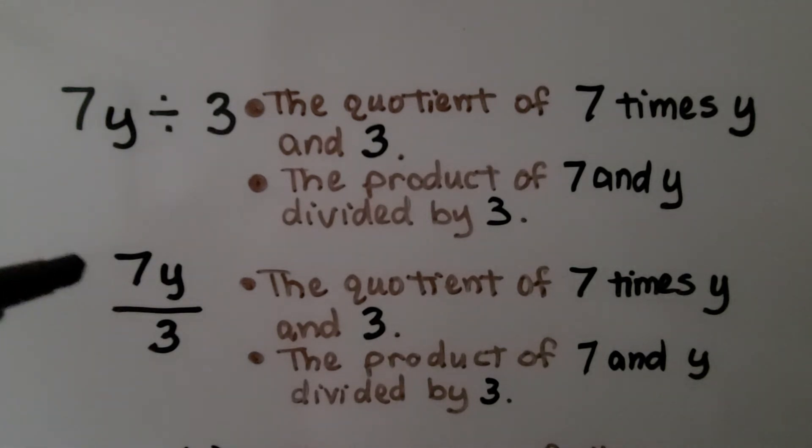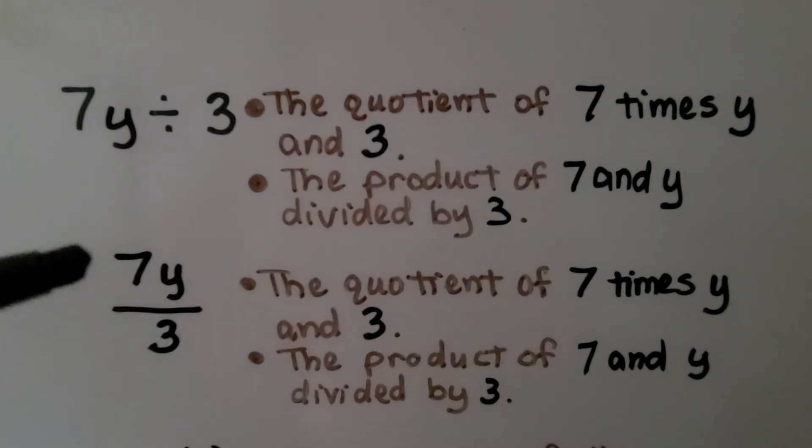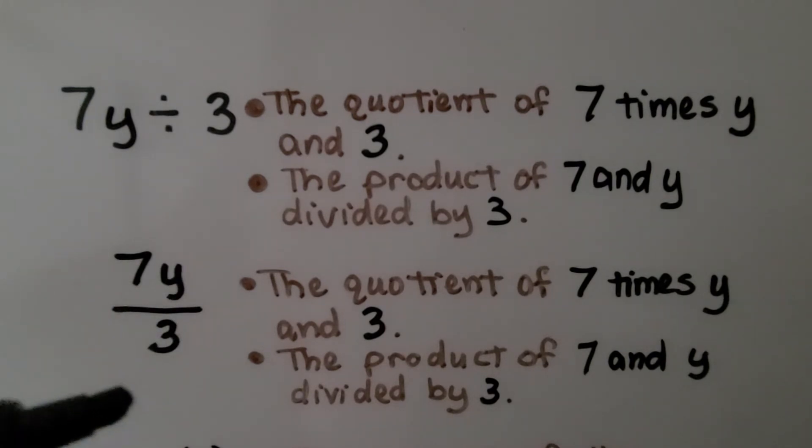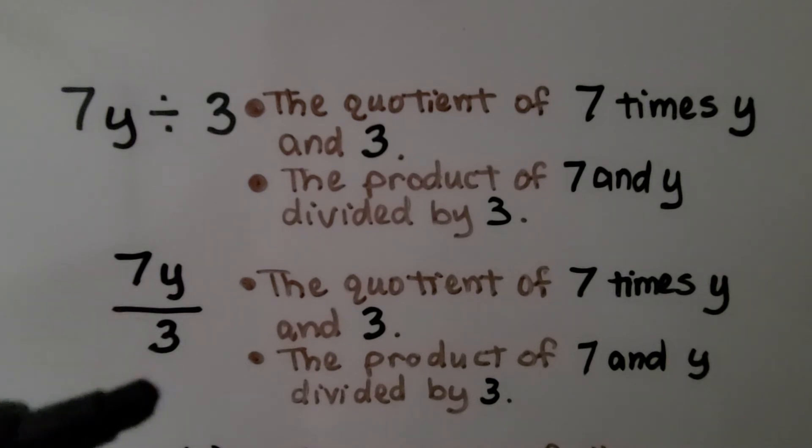And this is actually the same thing because this fraction bar means division, doesn't it? We have 7y divided by 3. It's the quotient of 7 times y and 3. And we can say the product of 7 and y divided by 3.